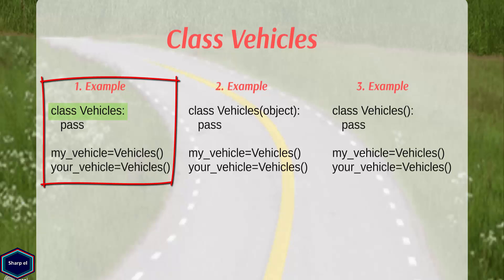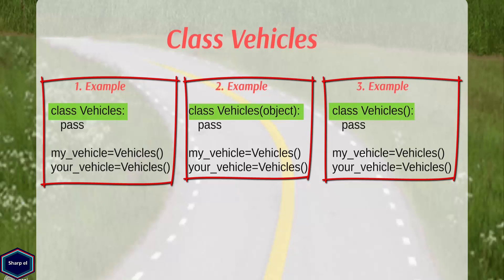In this example, I have defined class vehicles. There are also other ways to define a class in Python 3.5 as shown in other two examples. Internally they are all equal.